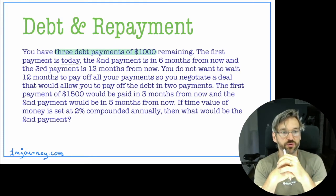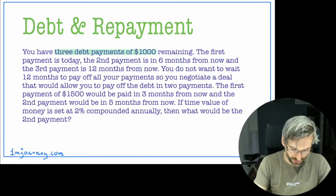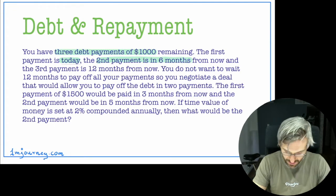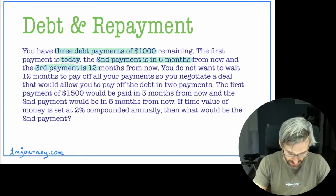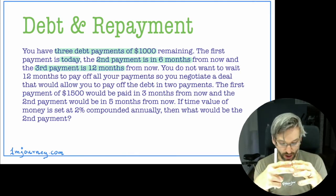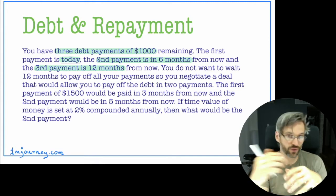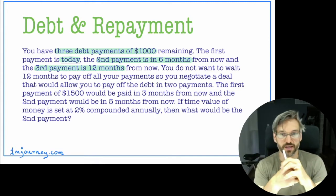The first payment is due today. The second payment is due in six months from now and then the third one is due in 12 months from now. So we have these payments — one today, one in six months, and one in 12 months.